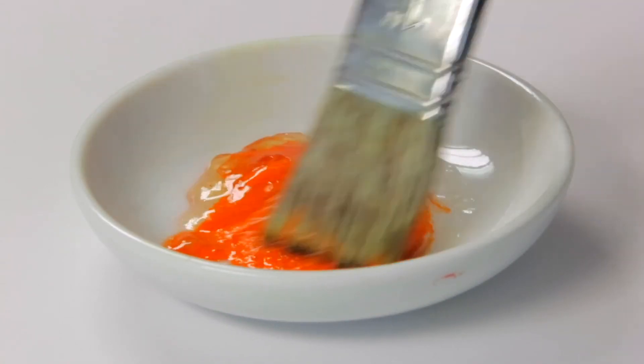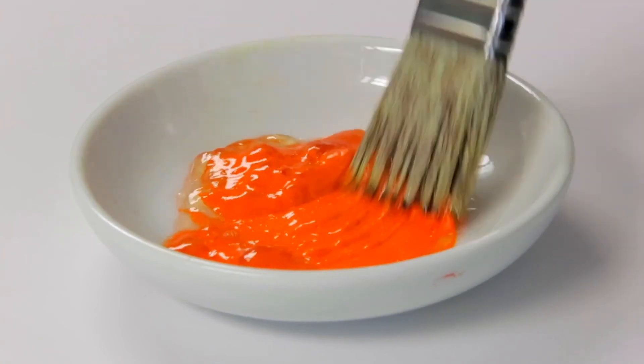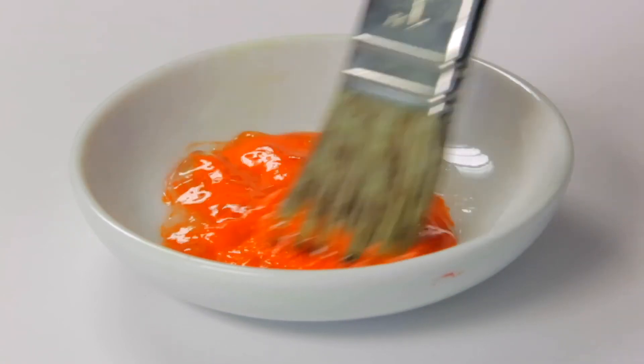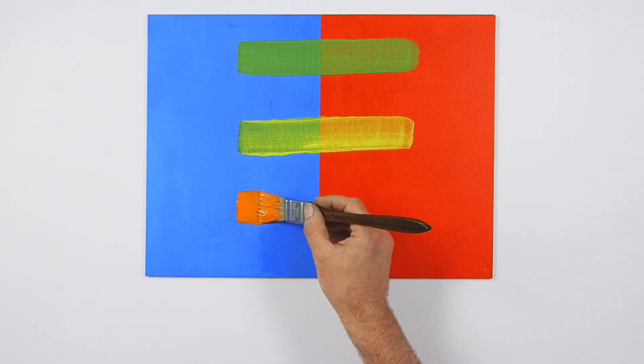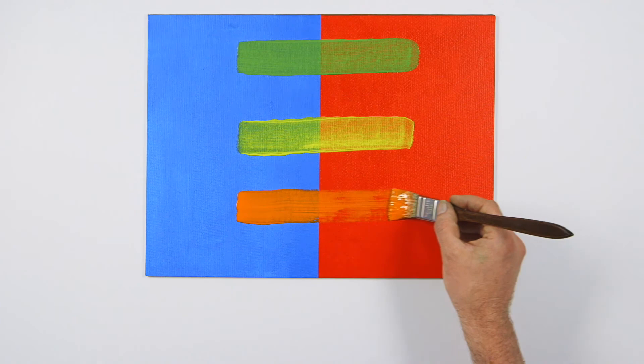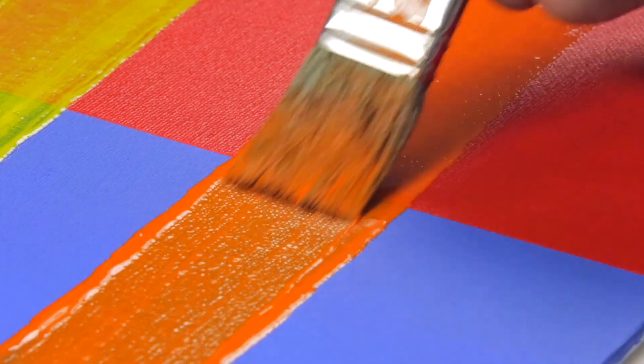By adding a medium such as Winsor & Newton Liquin Light Gel, I can accelerate the drying time and still get good clear layers and the best optical effects. The use of coloured grounds could also be an effective way of experimenting.